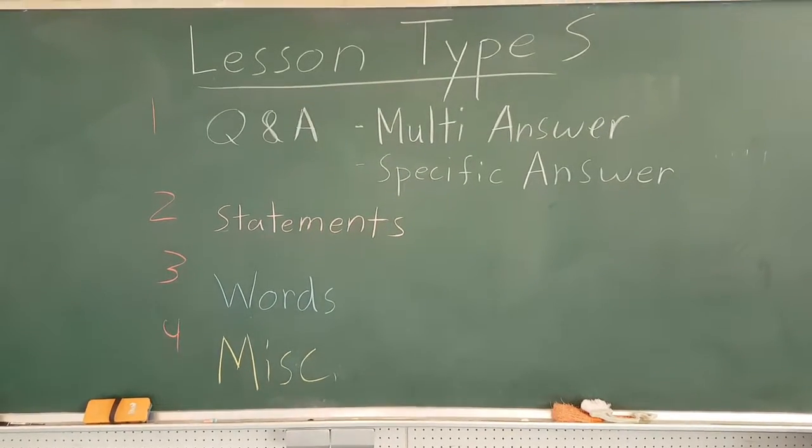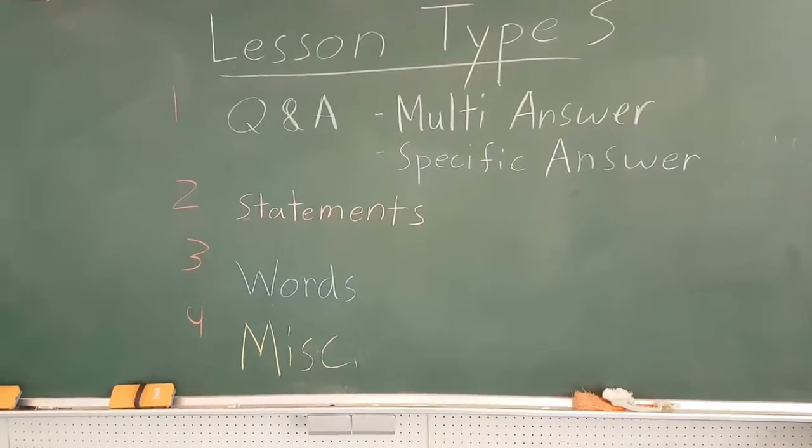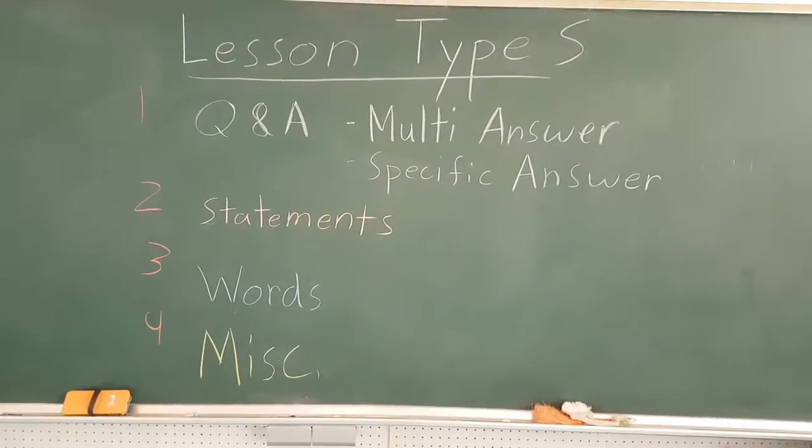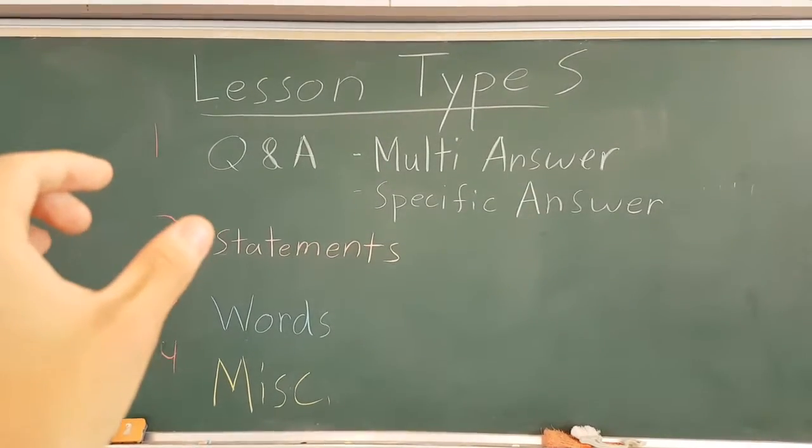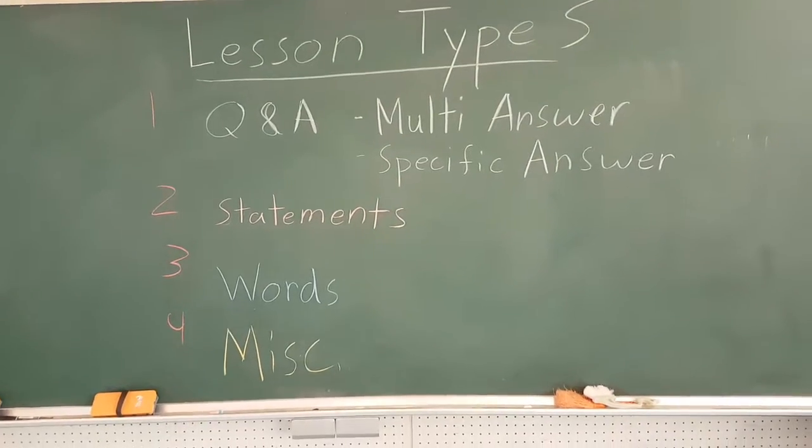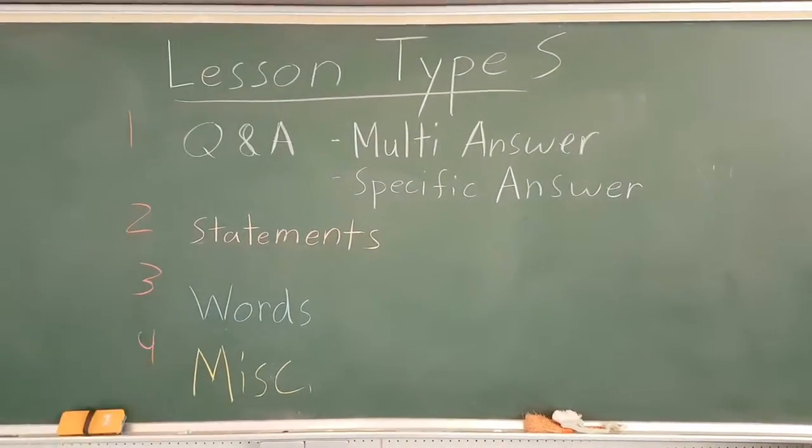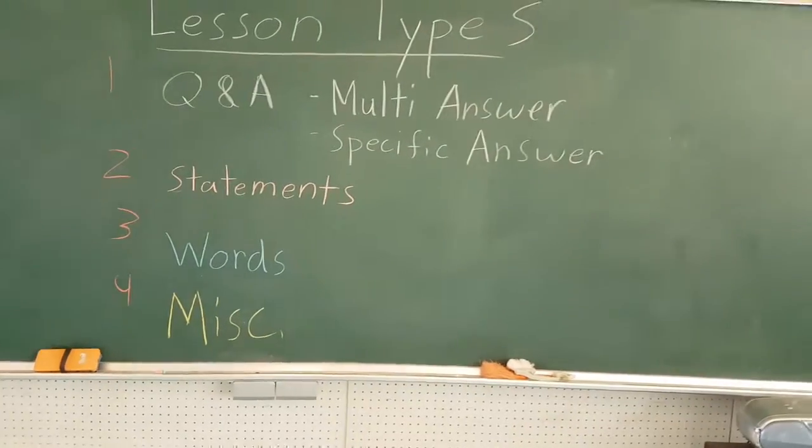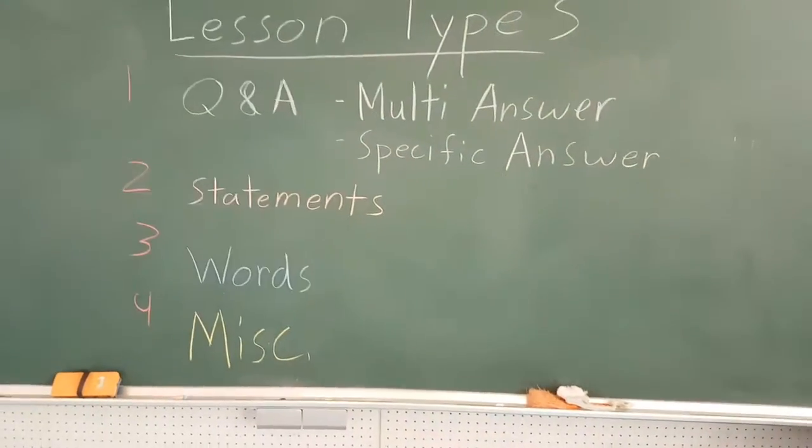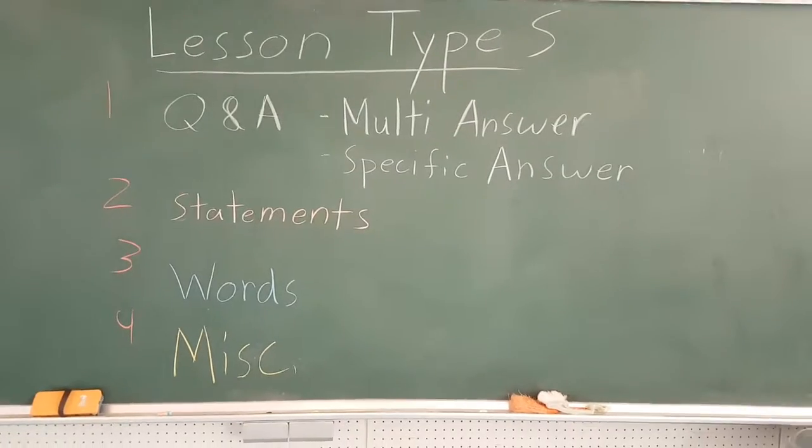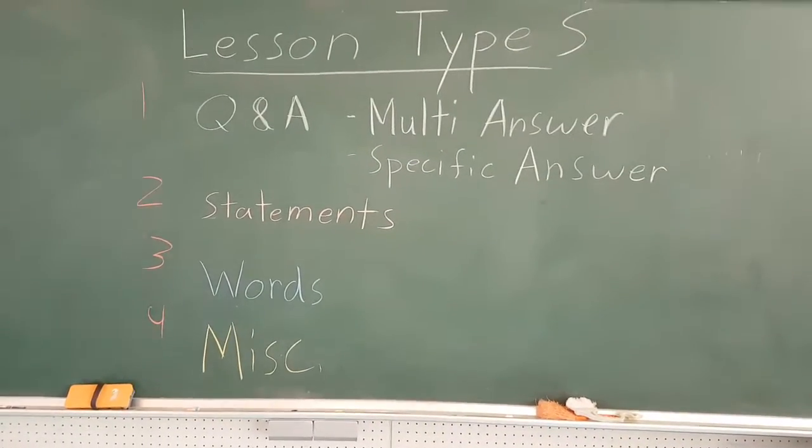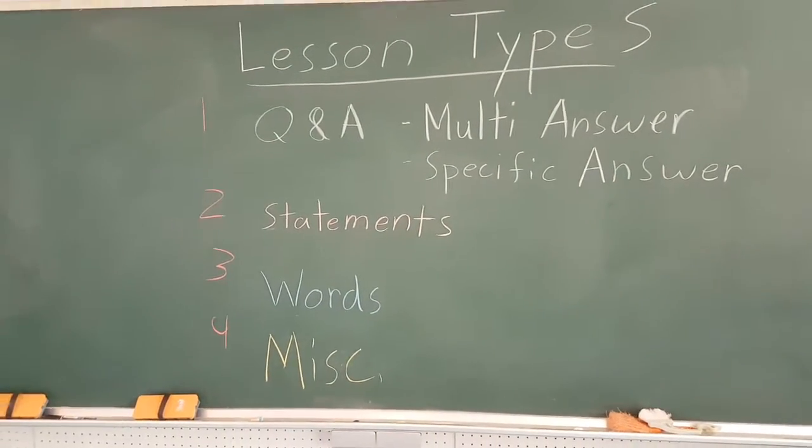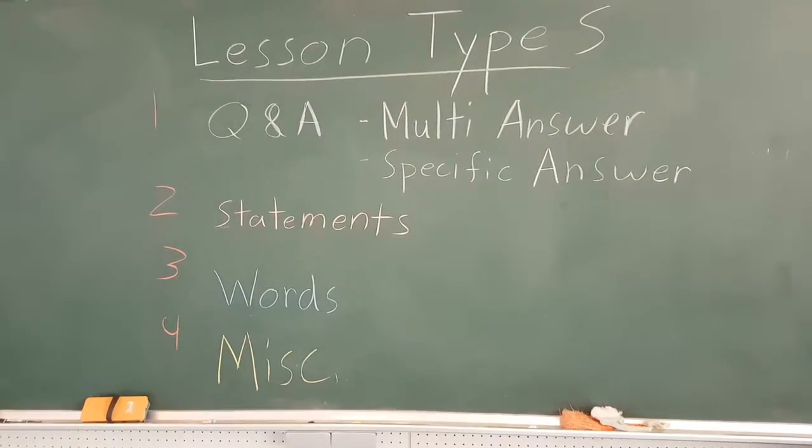Number two, statements. These don't have any natural interactions like Q&As. These are like I like dogs, I don't like cats, I can swim, I can't cook. Just statements. These are obviously way shorter, but they at least still have multiple answers. You can teach them I can dance, cook, swim, jump rope, whistle. You can choose whatever you want to say. It's more difficult to make a game for statement lessons than Q&As, but you can add in more words to teach them to make the lesson longer.